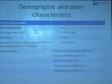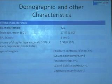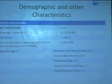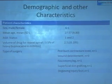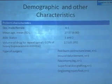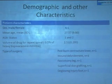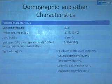A few demographics and other characteristics. I am sure this study is just a sort of pilot study. Total 6 male patients and 1 female patient. Mean age was 27, they were all young. ASA status 1 and 2. Volume of drug for repeat spinal was 2.51 ml with a standard deviation of 0.195. Types of surgery included: one post-burn contracture knee, three debridements, one fasciotomy, one superficial skin grafting, and one degloving injury.